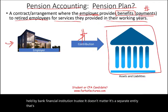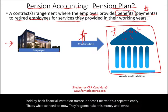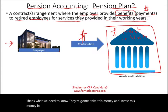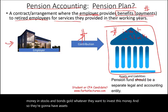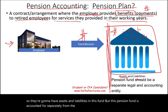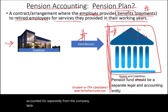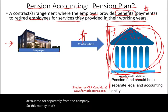They're going to take this money and invest it in stocks, bonds, gold, whatever they want. So they're going to have assets and liabilities in this fund. But this pension fund is accounted for separately from the company. The money sitting here is separate from the company's funds.